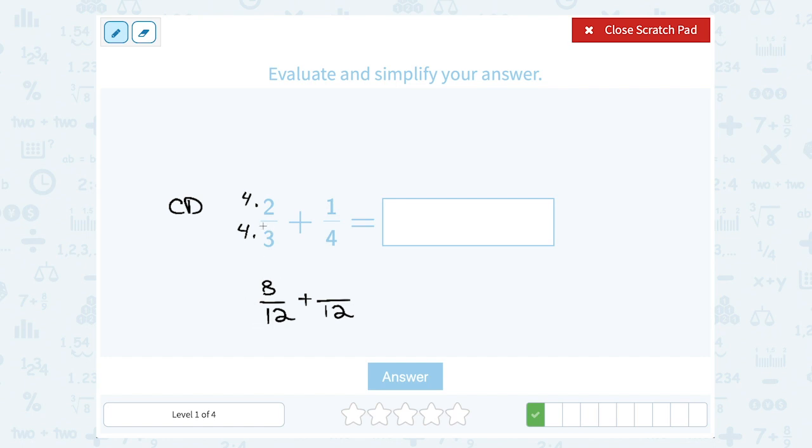So 2/3 and 8/12 have the same value. And then I want to do the same thing over here. To get from 4 to 12, I'm multiplied by 3. So I want to make sure I also multiply by 3 on the top. So 1 times 3 gives me 3.